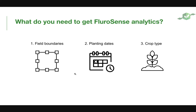When thinking about getting crop analytics and agronomic decision support, you need to be aware that it's important to have field boundaries, know the planting dates, and the crop type. Items two and three are optional, whilst having the field boundaries is the only compulsory input to operate the platform.